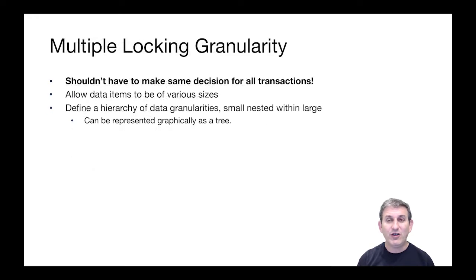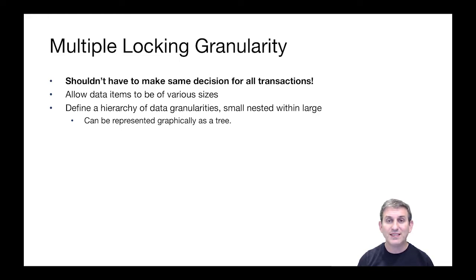Jim Gray, very early on in the development of transactions, came up with the idea of multiple granularity locking — that you shouldn't have to make the same decision for all transactions, and that different transactions could set locks at different granularities. We can allow data items to be of various sizes — tables, pages, tuples, and so on — and we can define a hierarchy of data granularities with smaller objects nested inside of larger objects.